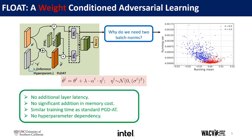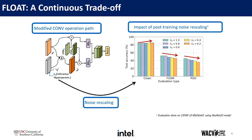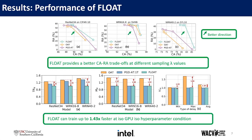We further propose test-time noise rescheduling to control the severity of noise associated with the noisy weight tensor. This allows us to yield a more continuous accuracy-robustness trade-off. Our experimental results show that FLOAT not only outperforms existing alternatives in better trade-off but also can yield faster training time of up to 1.43x.